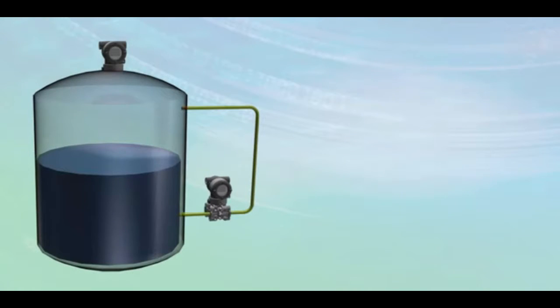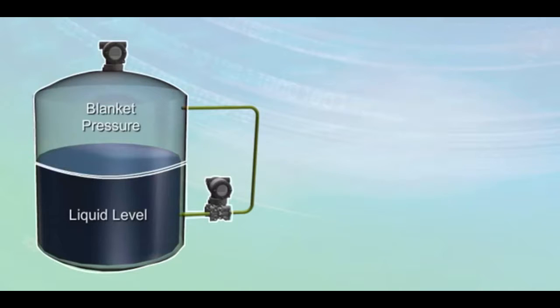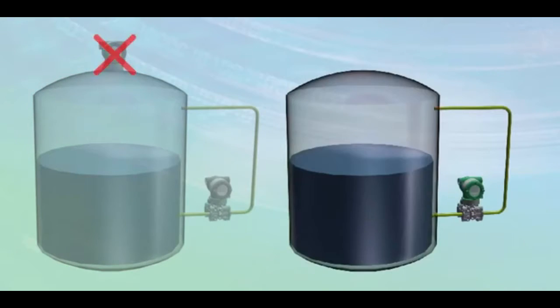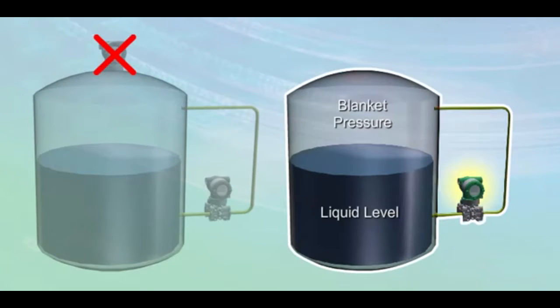The traditional approach to measure both level and blanket pressure is the use of two devices. However, multi-sensing capability allows for the use of only one device to measure both level and blanket pressure.